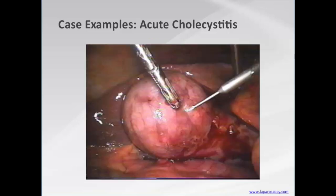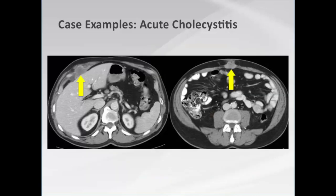Remember that today most gallbladders are removed laparoscopically, whether elective or in an acute setting. We must always keep in mind the possibility of an underlying gallbladder cancer. If a surgeon removes a gallbladder laparoscopically and there is a cancer not foremost in their mind, it can have a bad outcome. This patient is three months post-laparoscopic cholecystectomy — there was a non-suspected gallbladder cancer in the specimen — and now has seeding at the right upper quadrant and periumbilical port sites.